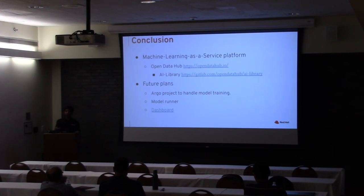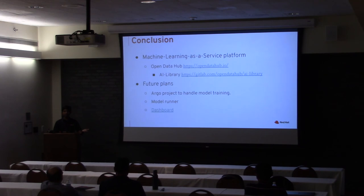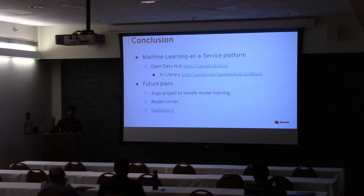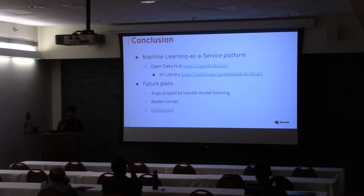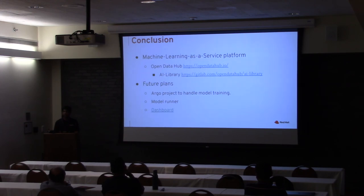Another upcoming feature is model runner: once you save a trained model to the S3 backend, it automatically detects the new model and spins up a service for it — without needing to go through the ODH operator or Ansible playbook. That feature is already in the library but still in testing. Finally, we've started building a dashboard and UI for AI Library — right now you have to form curl commands, which gets easier over time but it's still cumbersome, so a graphical interface is being developed.